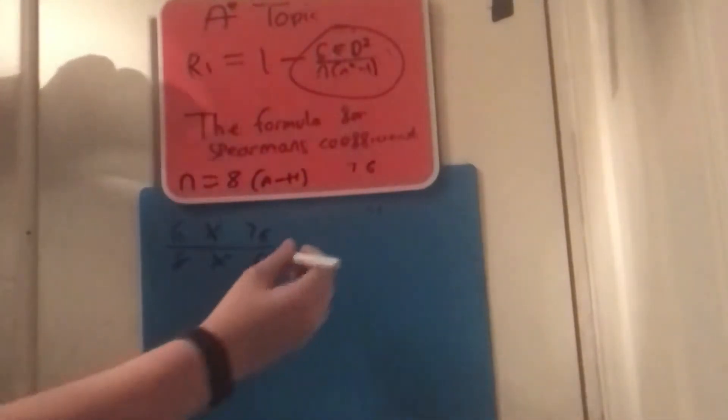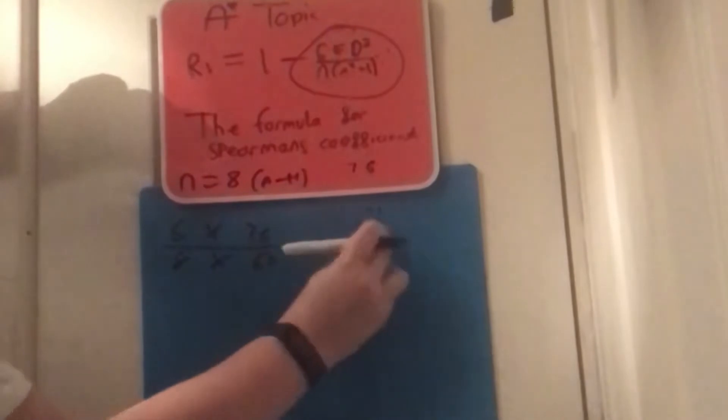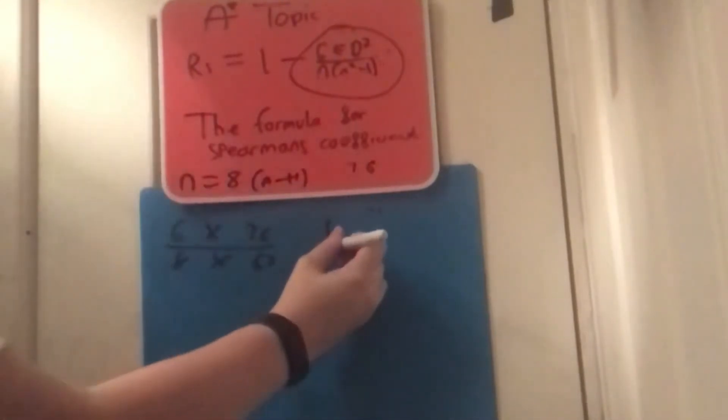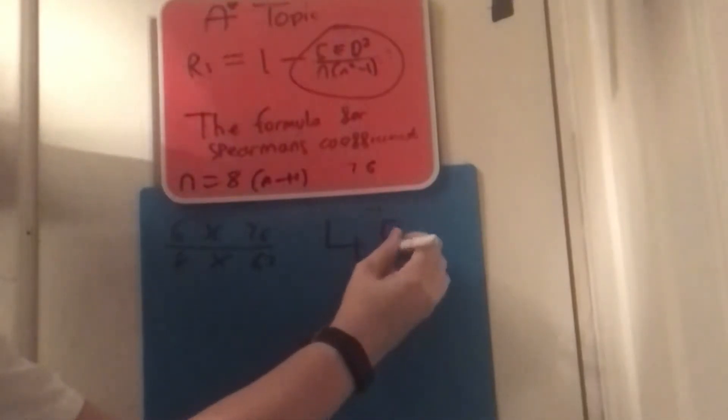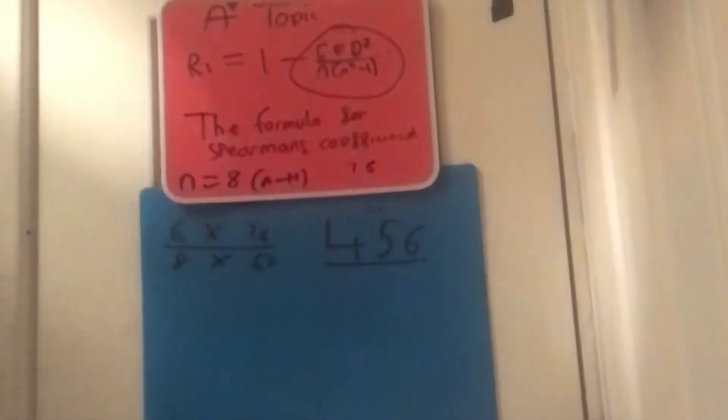If we do that, we get 6 times 76, it's 456. Right. So we get... Hang on, I'll do it bigger. What is it? 4, 5, 6. We have 456 over 8 times 63, it's 504.